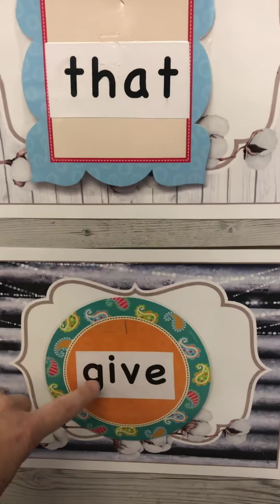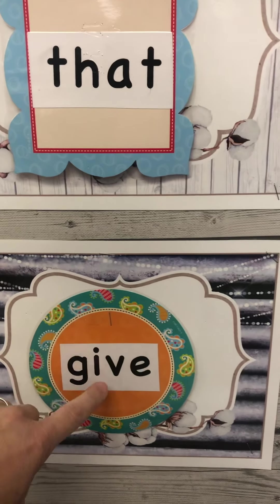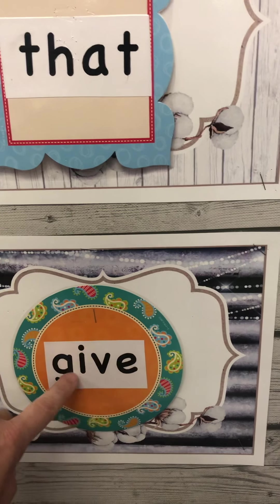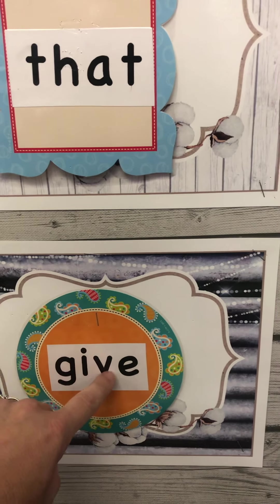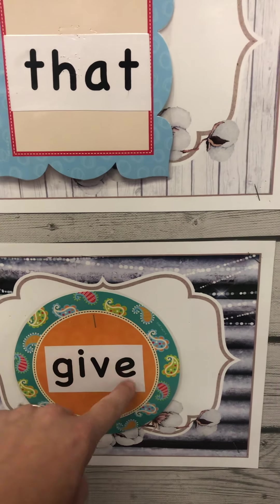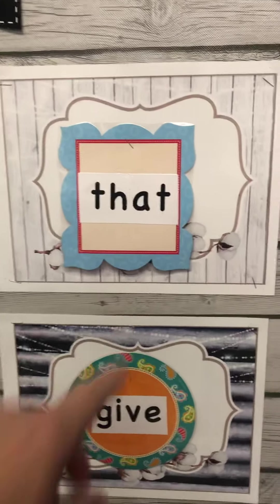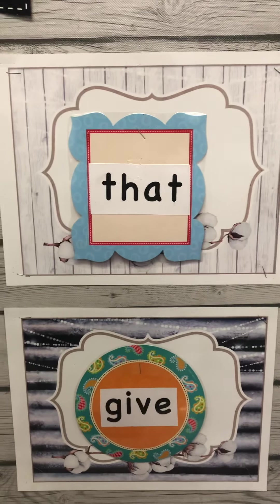This one is 'guh,' 'ive' — give. This E is silent. So 'guh,' 'ive' — give. So it's 'give' and 'that' for the words this week.